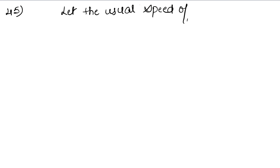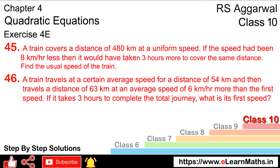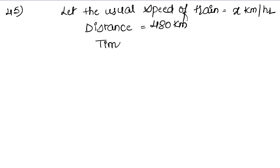So we have to find the usual speed of the train. Let the usual speed of the train be x km per hour. The distance to be covered is 480 km. If speed is reduced by 8 km per hour, it will take 3 hours more to reach. The time formula is: time = distance upon speed.